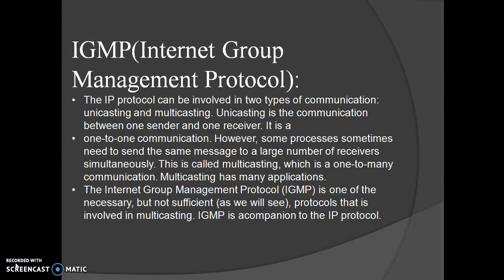The next topic is IGMP, also called the Internet Group Management Protocol. The IP protocol can be involved in two types of communication: unicast and multicasting. Unicasting is communication between one sender and one receiver — a one-to-one communication. However, some processes sometimes need to send the same message to a large number of receivers simultaneously. This is called multicasting, which is a one-to-many communication. The Internet Group Management Protocol is one of the necessary protocols involved in multicasting and is a companion to the IP protocol.